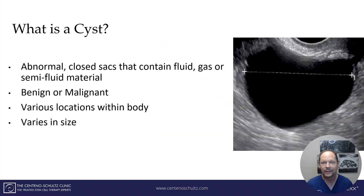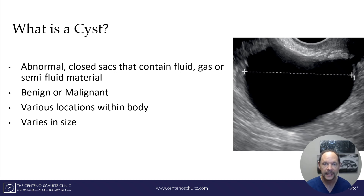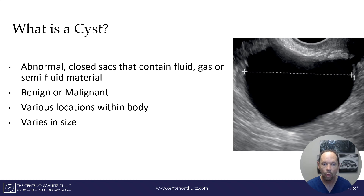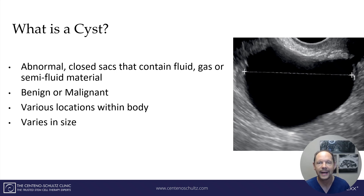What in the world is a cyst? It's basically an abnormal closed sac that contains different material — it can be a fluid, a gas, or a semi-fluid material. It can either be benign or malignant, meaning cancerous, and they can be found all throughout the body in different sizes. What we're focusing on today are those cysts that occur in the thoracic spine.